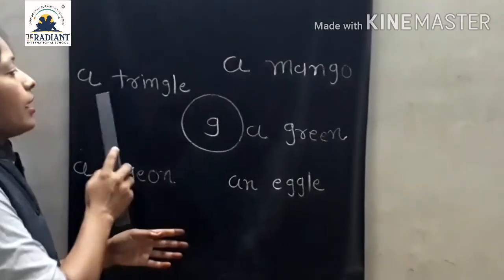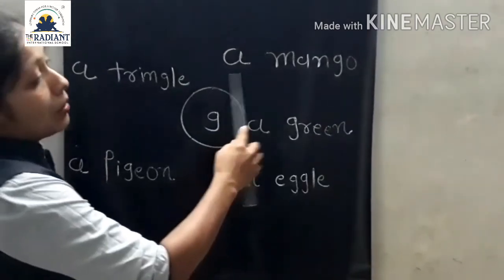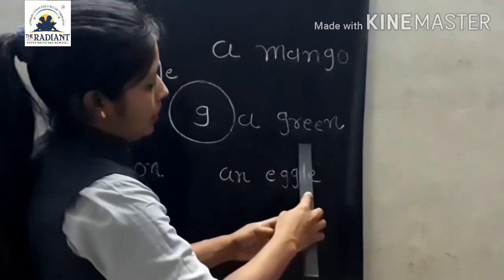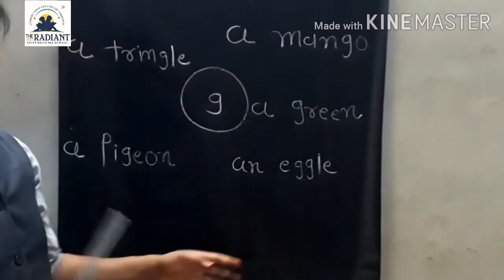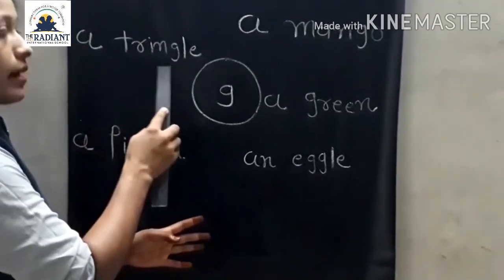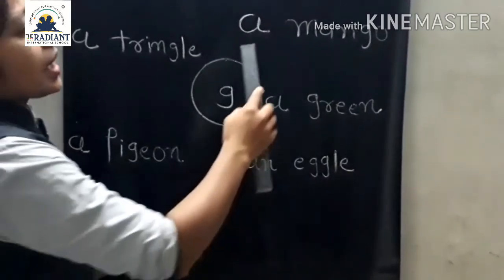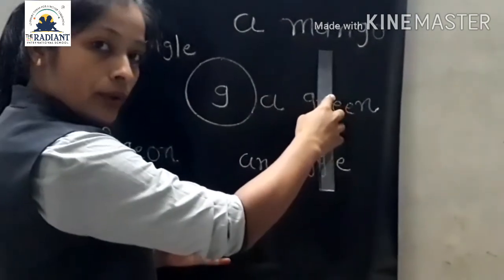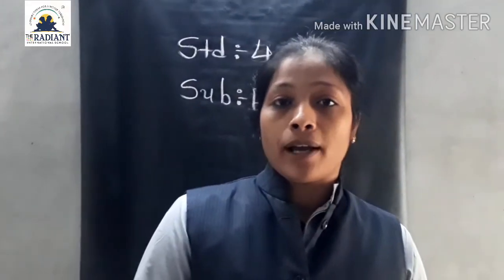First, we read the words: a triangle, a pigeon, a mango, a green, and eagle. Friends, we are words — samarun yaan aapnei joi repeat karwana reishi. A triangle, a pigeon, a mango, a green, and eagle. Okay friends, tamanayi aaj nae activity 1 samarun yaan aapnei joi question naa. Okay friends, marimari show. Goodbye, take care.